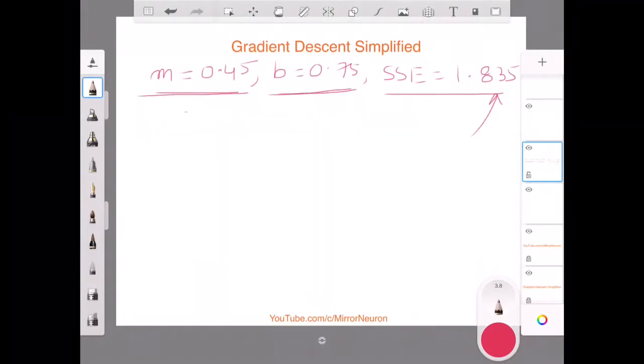So the expression for sum of squared error, as we have seen, is nothing but the y original, the original value, minus the y predicted value squared. This can also be written as y original, just taking o as a subscript, minus y predicted, which is nothing but mx minus b.